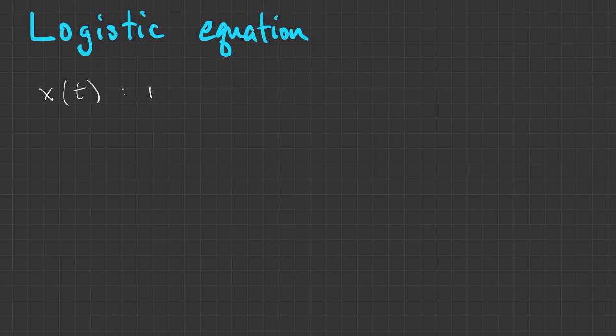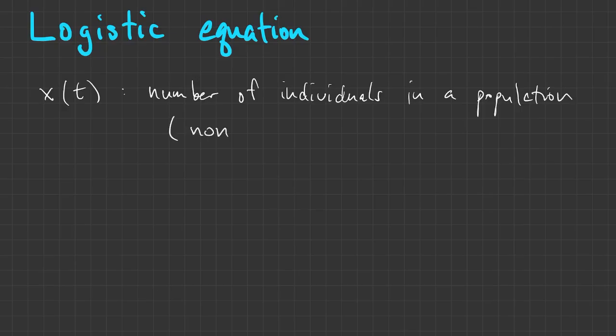The logistic equation can model a number of different things, but here we're going to let x(t) be the number of individuals in a particular population. And it's going to be a real number, so non-integer values are allowed, which means you'd have to take this with a grain of salt for small populations.